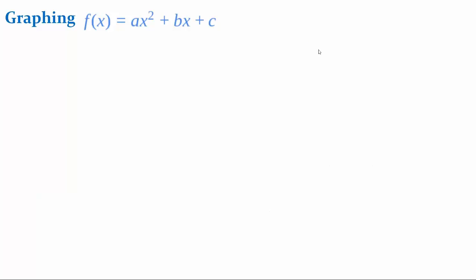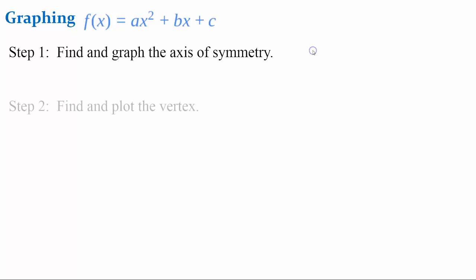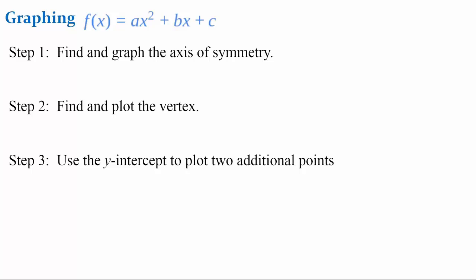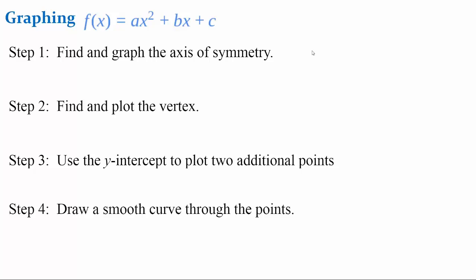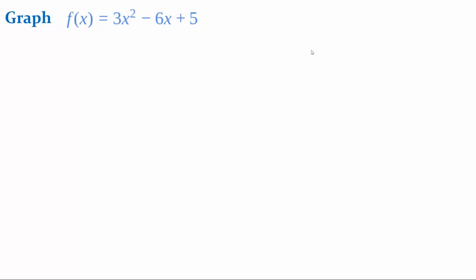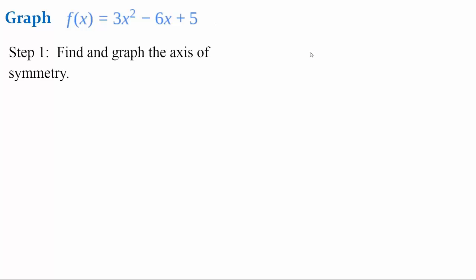Now let's go over graphing a quadratic function in standard form. Step 1: find and graph the axis of symmetry. Step 2: find and plot the vertex. Step 3: use the y-intercept to plot two additional points. Step 4: draw a smooth curve through the points. Let's try an example: graph f(x) = 3x² - 6x + 5. For Step 1, using x equals negative b over 2a with b = negative 6 and a = 3, we get the axis of symmetry as the line x equals 1.